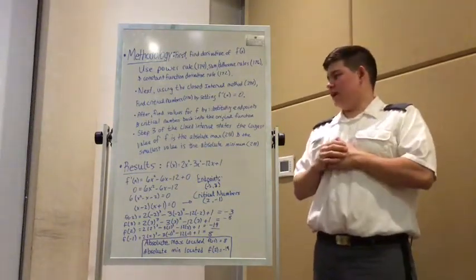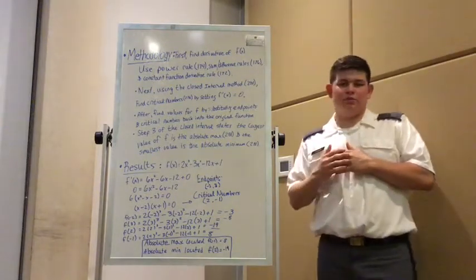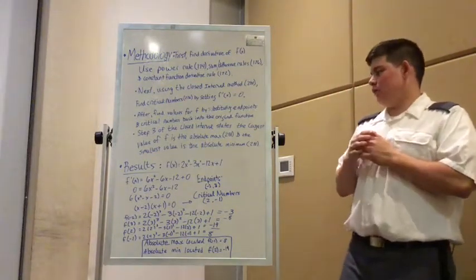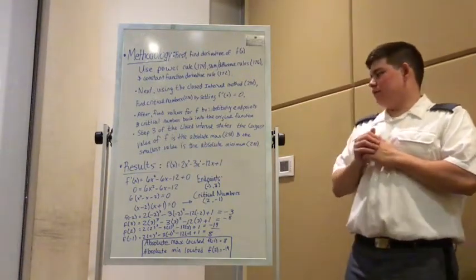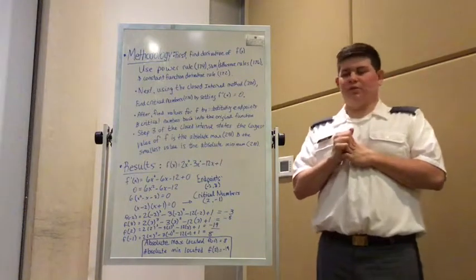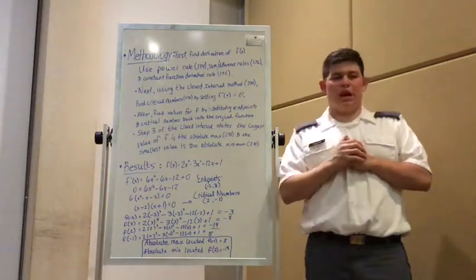After that, we find values for f by substituting our endpoints and critical numbers back into our given function, then step 3 of the closed interval method states the largest value of f is the absolute max, and the smallest value is the absolute minimum.